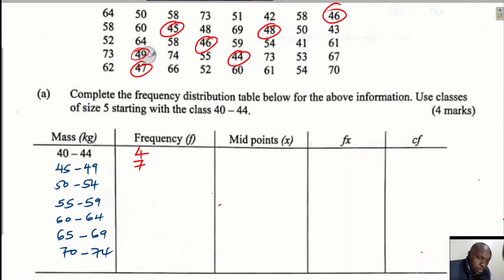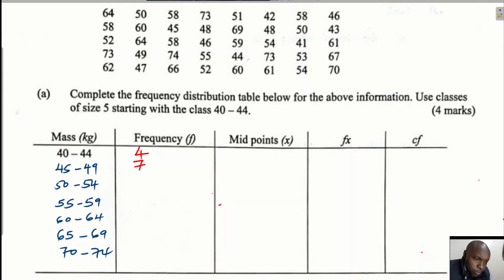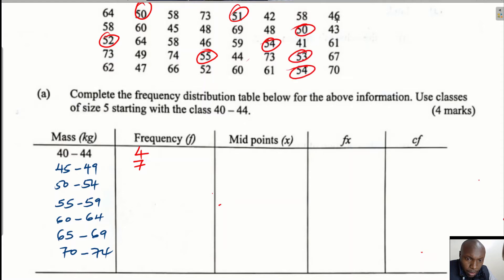The next class to check is 50 to 54. Going through and identifying all values between 50 and 54: counting them — one, two, three, four, five, six, seven, eight — there are eight values in this class.